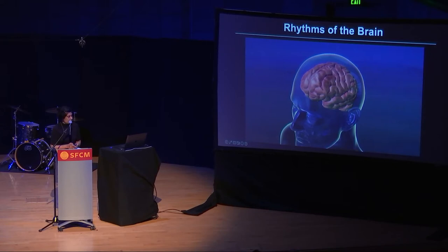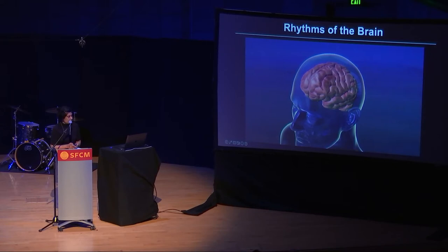Neural oscillations, as we know about them today, are a mechanism that our brains have to coordinate these neuronal activity patterns.